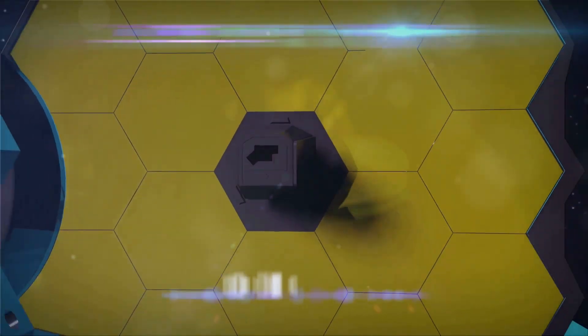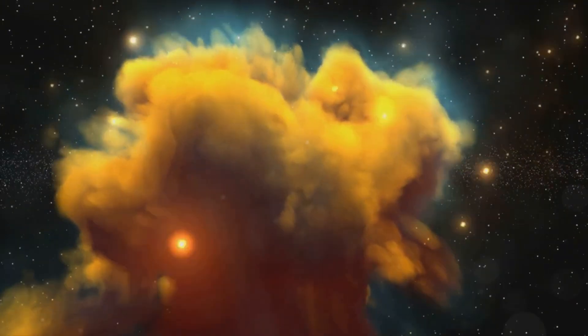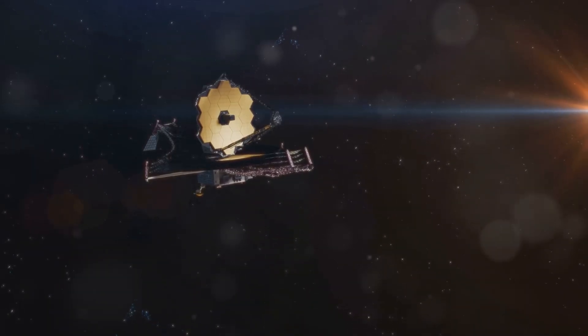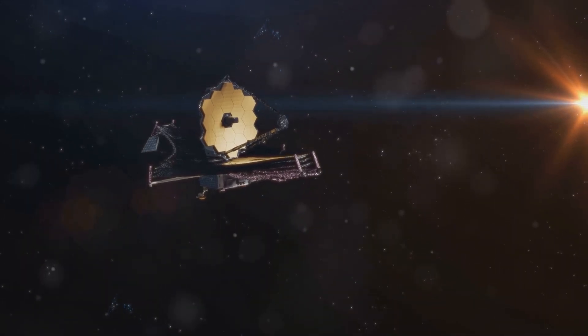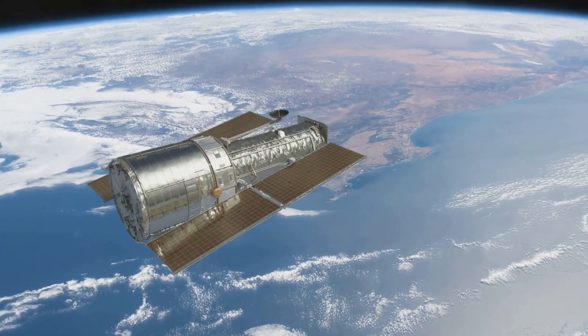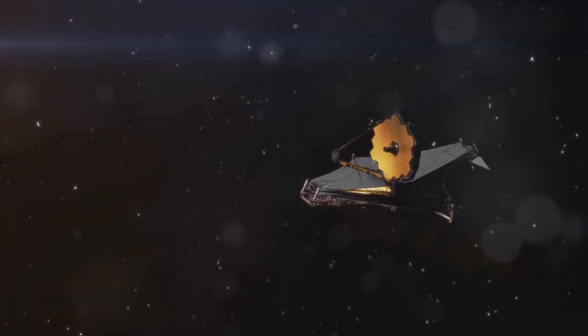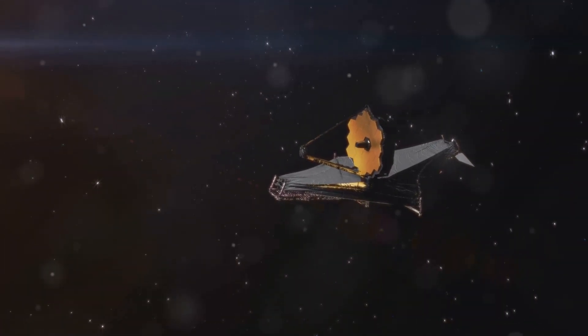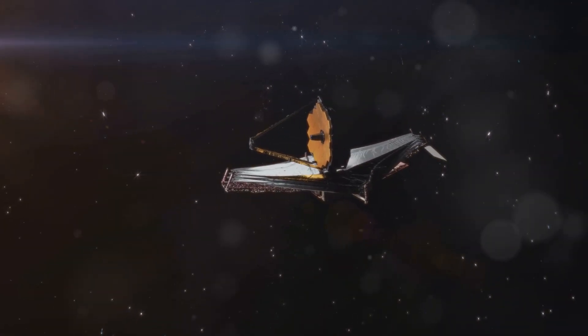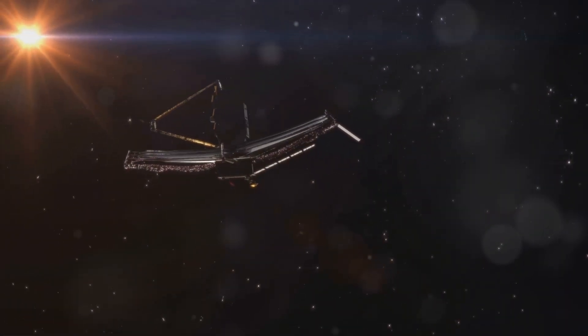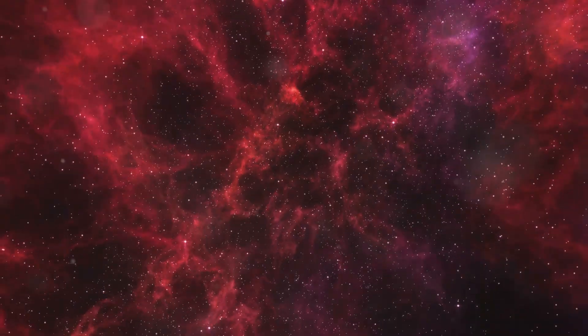The James Webb Space Telescope is designed to observe the universe in infrared light. Infrared light is a type of electromagnetic radiation that has a longer wavelength than visible light. Human eyes can't see infrared light, but it can be detected by special telescopes. There are several reasons why JWST observes in infrared light. First, the most distant objects in the universe are very faint, and their light has been stretched out or red-shifted into the infrared part of the electromagnetic spectrum by the expansion of the universe.